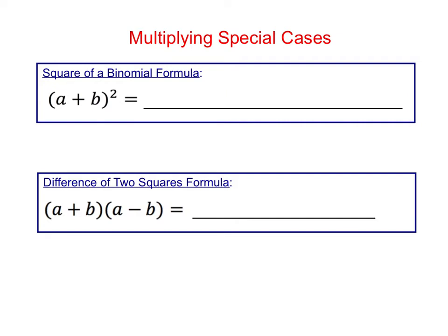The shortcut for the square of a binomial — that's if you have something squared, which means times itself — the formula for that is a squared plus 2ab plus b squared. If you have the product of a sum and a difference, where everything's the same but one has a plus sign in the middle and one has a minus sign in the middle, the shortcut for that is a squared minus b squared. The middle terms are going to cancel out when you have the product of a sum and a difference.